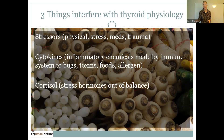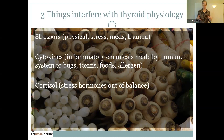The third thing that affects thyroid physiology is cortisol — or rather, too much cortisol or dysregulated cortisol, not having the right amount of the stress hormone cortisol when you need it. If you have a lot of problems with stress, or your blood sugar is all over the map, or you don't have a regular eating pattern, that's all going to lead to dysregulated cortisol and create a thyroid problem.